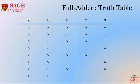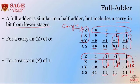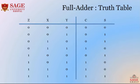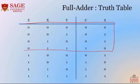This is the truth table of the full adder. It is shown in tabular form: 0,0,0 gives carry 0 sum 0. The first four inputs behave like the half adder, and then the carry-in changes the results: inputs 1,0,0 give 0,1; inputs 1,0,1 give 1,0; two ones and one zero give 1,0; and three ones give sum 1 and carry 1.